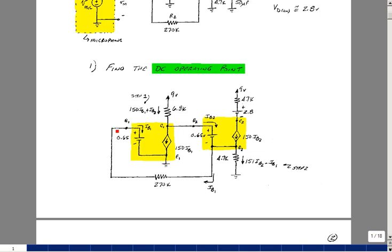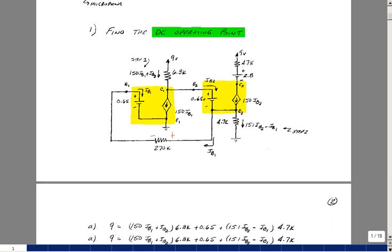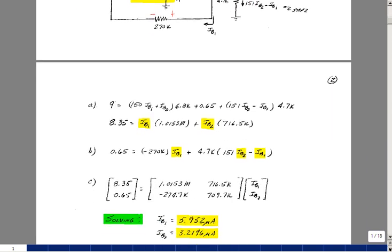You just need to find two paths that do not have exactly the same components in them, and so this is true about this case here. So the rise in voltage is 0.65. The drop across this resistor is going to be a minus 270K times IB1, plus the drop across the 4.7K, which is 150 IB2 minus IB1 times 4.7K.